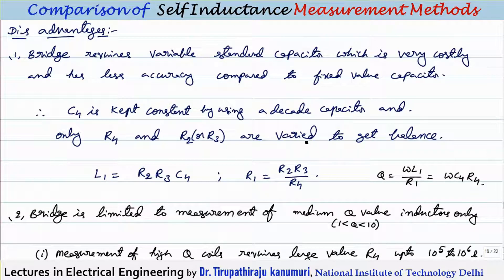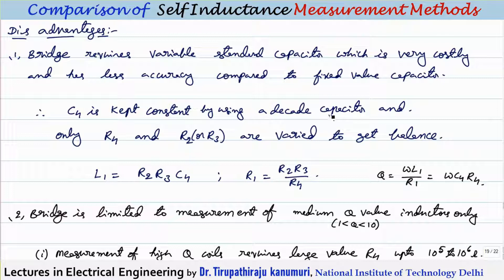The disadvantage of this bridge is that it requires a variable standard capacitor, which is costly. Second, the variable capacitor is less accurate compared to a fixed capacitor. Practically, C4 is kept constant using a decade capacitor box, selecting the appropriate capacitor from a fixed capacitor bank.